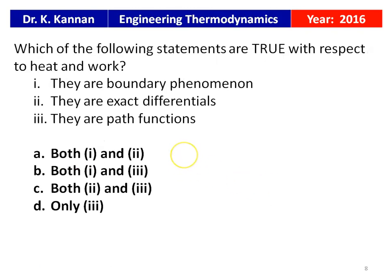From the 2016 question paper: Which of the following statements are true with respect to heat and work? (1) They are boundary phenomena. (2) They are exact differentials. (3) They are path functions. Heat and work cross the boundary of the system, so statement 1 is correct. They are inexact differentials (written as δW, δQ), so statement 2 is incorrect. They are path functions, so statement 3 is also true. The answer is 1 and 3.